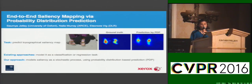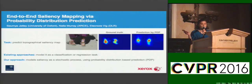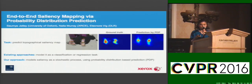It is in this area that existing approaches model saliency as a classification or regression task, while our approach revisits saliency as a stochastic process and tries to predict it as a probability distribution.